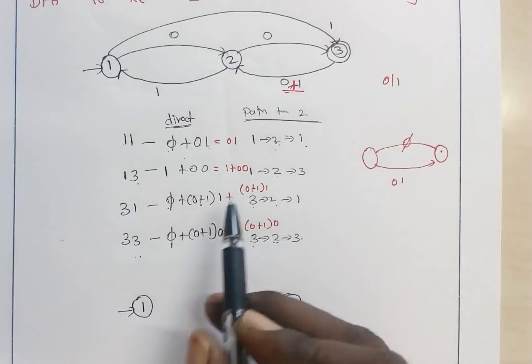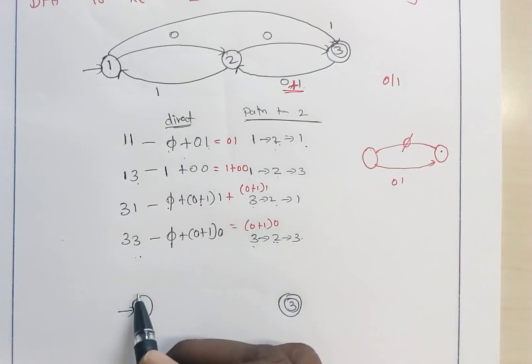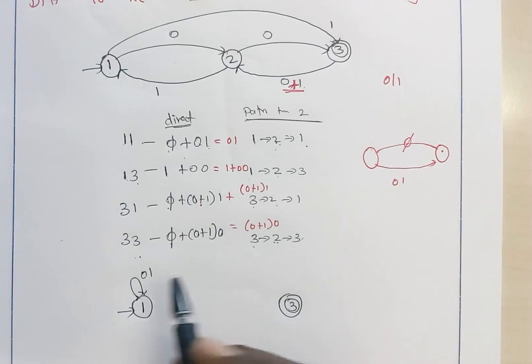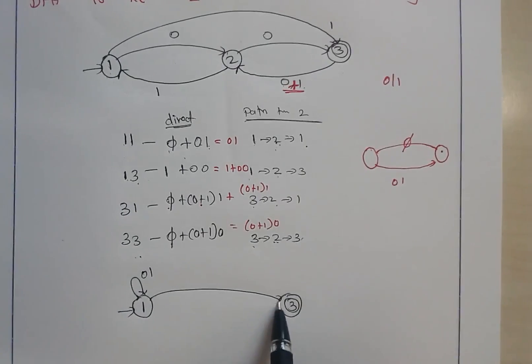The transitions are updated like this: from 1 to itself, the transition is through the input 0+1, and 1 to 3, the transition is written as 1+00.